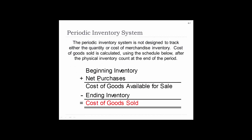The periodic inventory system is not designed to track either the quantity or cost of merchandise. Cost of goods sold is calculated using a schedule after a physical inventory count. For a periodic system, we calculate cost of goods sold using this formula: beginning inventory plus net purchases equals cost of goods available for sale; subtract ending inventory and that gives us cost of goods sold.